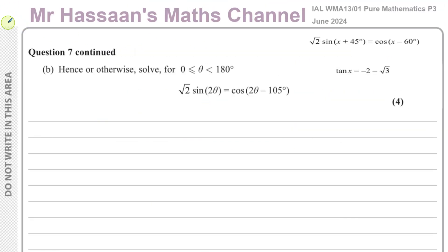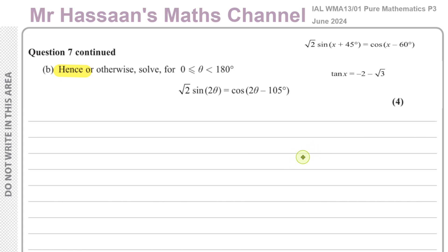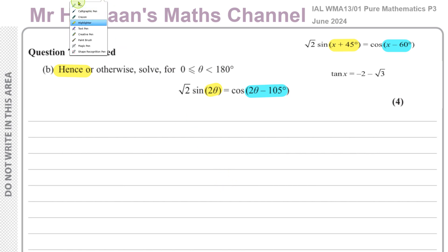For part B, it says 'hence or otherwise.' Normally the hence method is the easier way to do it. They're kind of pushing you that way — sometimes a question will say hence only. Here, 'hence' means using the result we just proved. Comparing the two equations, the x plus 45 has been replaced by 2 theta, and the x minus 60 has been replaced by 2 theta minus 105.